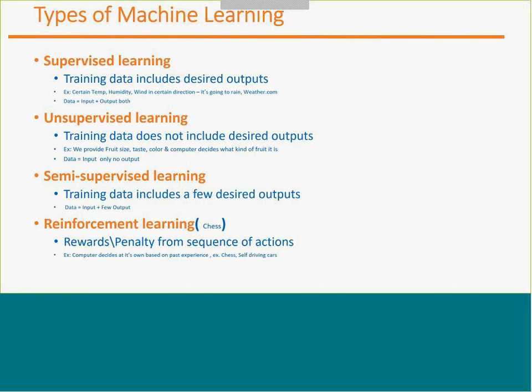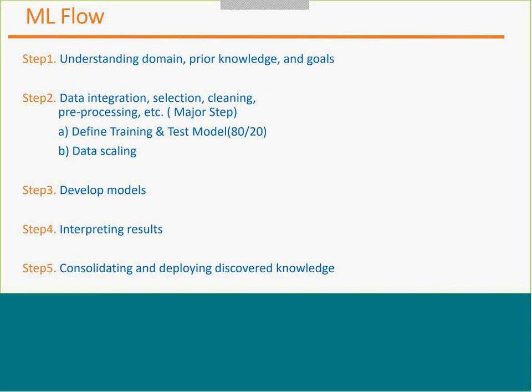Just a quick summary: in supervised learning we have both input and output. In unsupervised learning we have input only. Semi-supervised learning has input and partial output. Reinforcement learning works based on rewards and penalties.